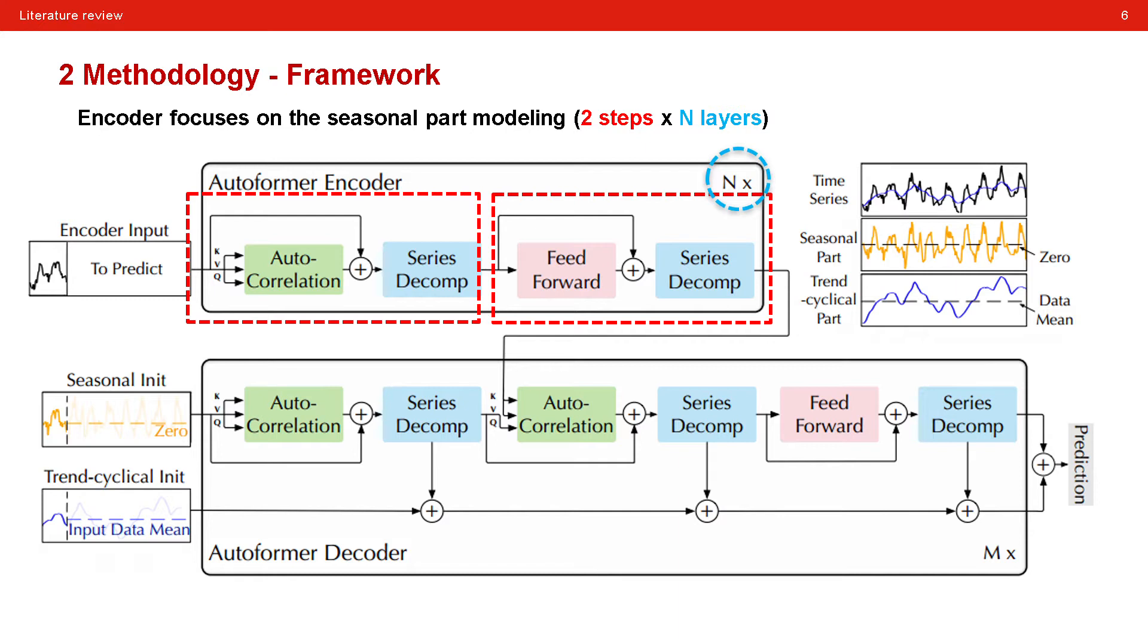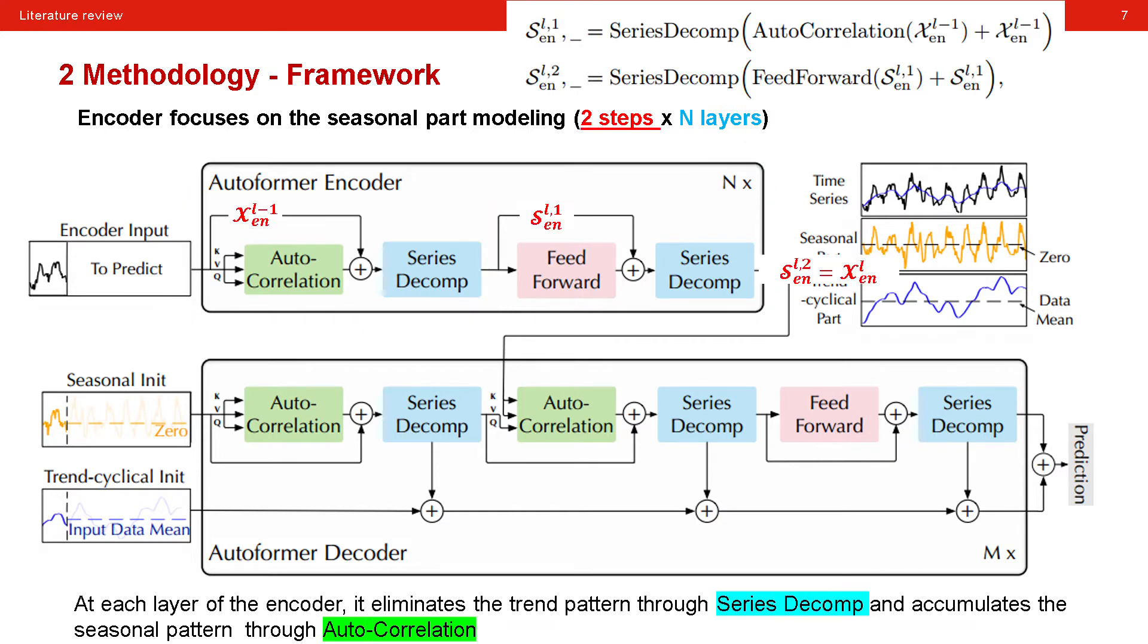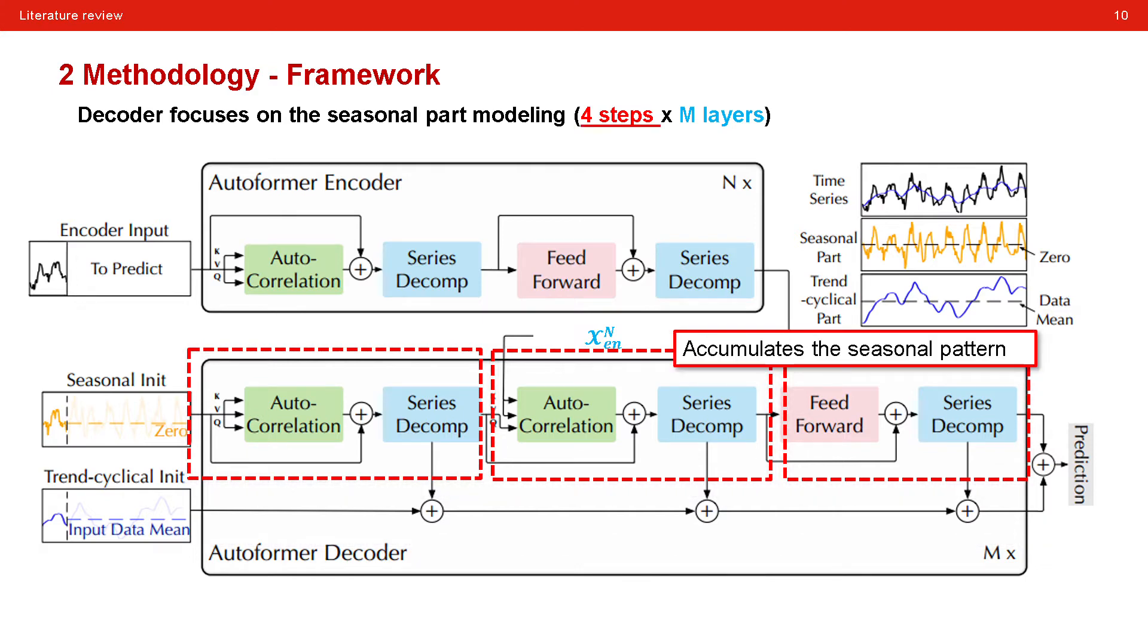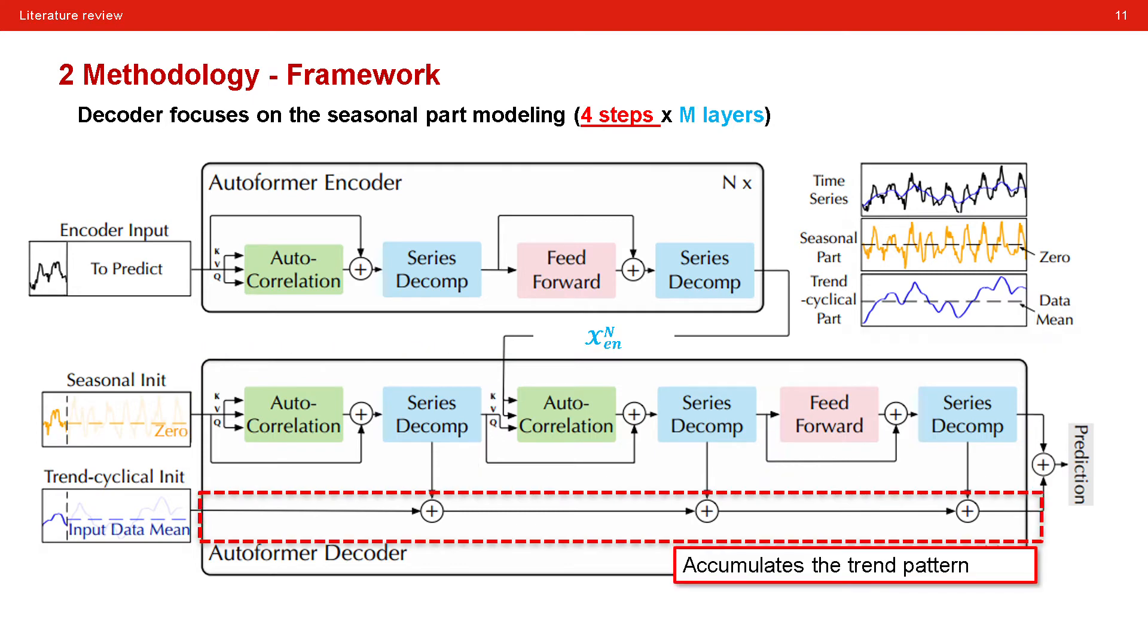I have noted the information flow in the figure according to the mathematical expression, and we can see that at each layer of the encoder, it eliminates the trend pattern through series decomposition and accumulates the seasonal pattern through auto-correlation. The output of the Nth layer is the input to the decoder. In decoder, it contains N layers in which there are mainly four steps. The first three steps are designed to accumulate the seasonal pattern, and the last step is for the trend pattern accumulation.